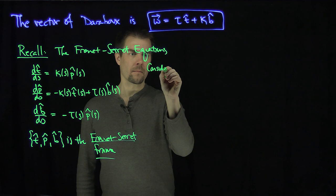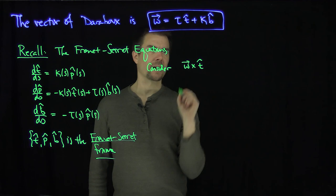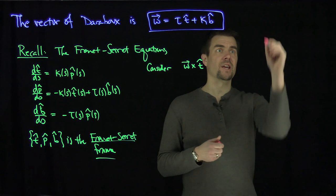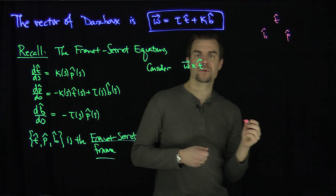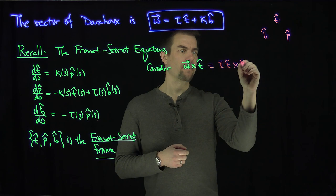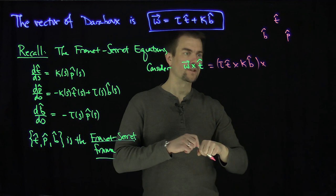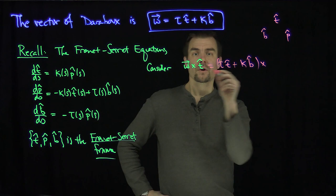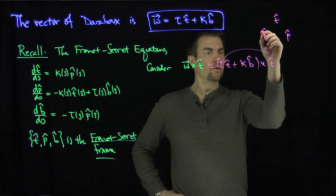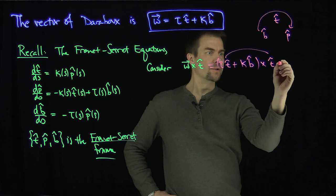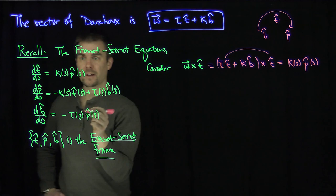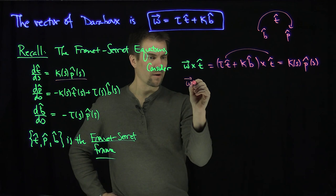Consider ω × t̂. Recalling the cross-product relationships for t, p, and b — just like i, j, and k — this is going to be τ t̂ + κ b̂, all crossed with t̂. Now t̂ × t̂ = 0, and b̂ × t̂ = p̂. So this gives us κ(s) p̂(s). That's great, because κ(s) p̂(s) is exactly dt/ds.